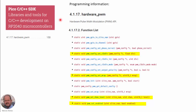Another very important reference is the Pico C/C++ SDK — Libraries and Tools for C/C++ Development on RP2040 microcontrollers. In the PWM section we find all the information related to the APIs for programming the PWM. Today we are going to use the functions for setting the clock divider, setting the wrapping to set the frequency, setting the channel level to set the duty cycle, and enabling the slice of the PWM module.